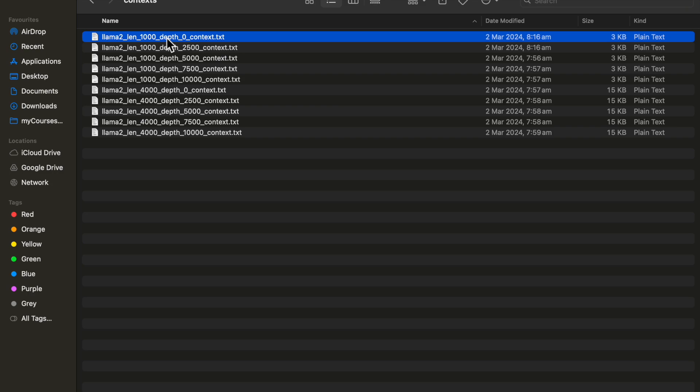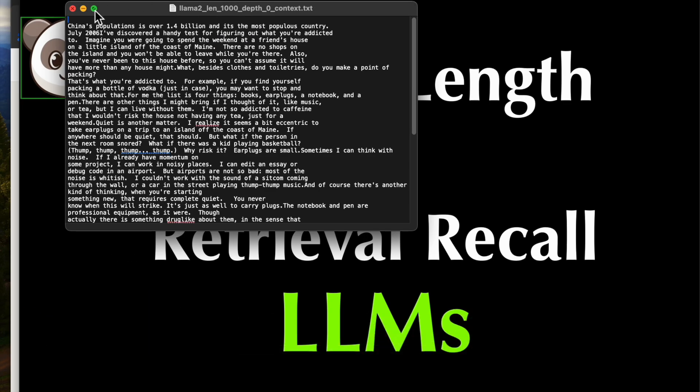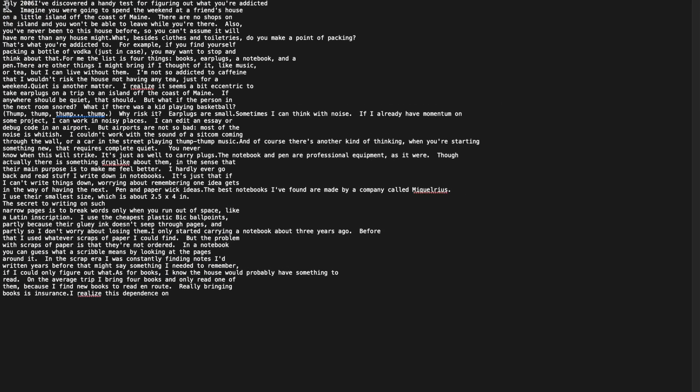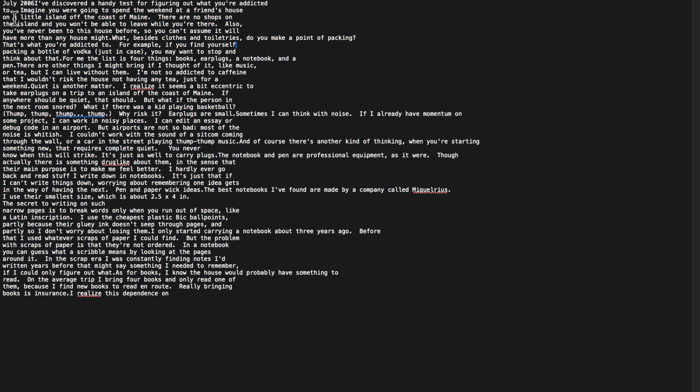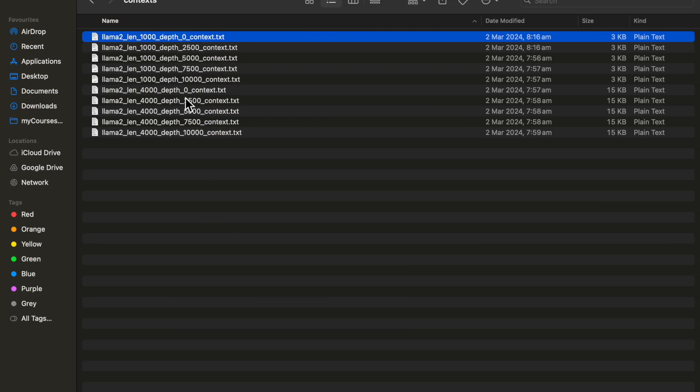So here we have a document with token length 1000 and our needle is this China population is over 1.5 billion and it's the most popular country. So that's a very carefully designed text, which is very different from what these Paul Graham essays are about. So that's a token length of 1000 and depth 0.